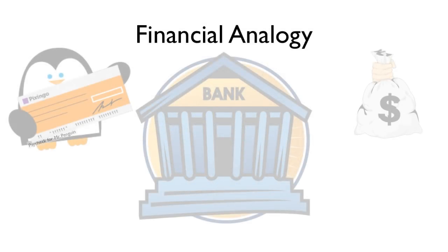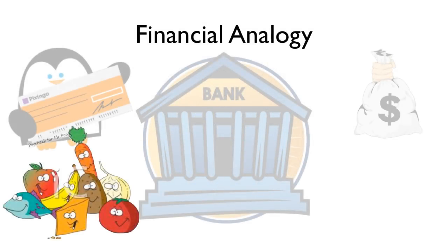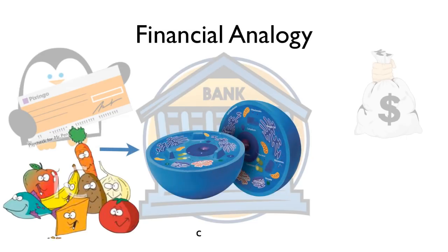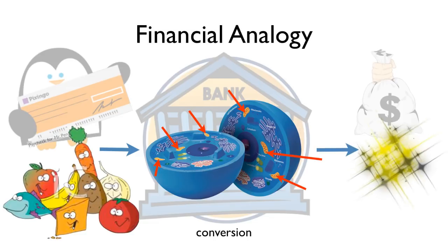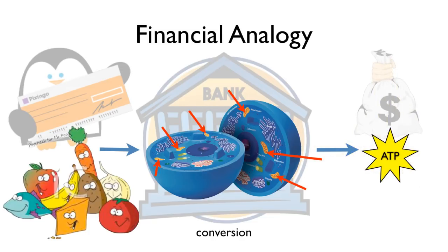The analogy here is that the paycheck is the food that you eat — the fuel molecules we take in. We cannot use the energy from food directly. They have to be processed. All those nutrients get broken down and then converted mainly by organelles in the cells called mitochondria, which we're going to spend time looking at today. And then we convert that energy from the food molecules into ATP.